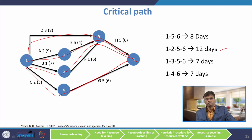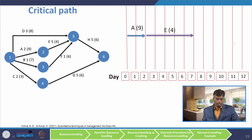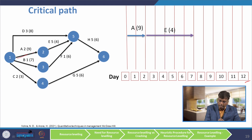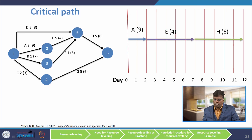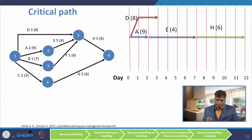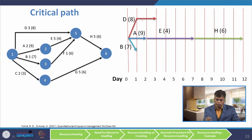We are finding critical activities because you cannot do any adjustment on them — there is no slack in those activities. I have given a scale up to 12 days and written all the critical activities: activity A, activity E, and activity H. Activity D has a duration of 3 days and a manpower requirement of 8 — the value in brackets is the manpower requirement. Activity B has a manpower requirement of 7 and a duration of 1 day. Activity F has a duration of 1 with a manpower requirement of 6.